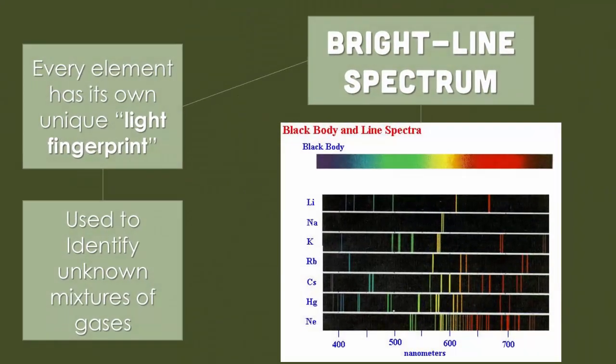Now we get these bright line spectrums. This is a very unique light fingerprint for each and every element, and we use it to identify unknown mixtures of gases. For example, the stars. This is how astronomers are going to determine what elements make up a star that is billions of miles away from us. They identify their bright line spectrums, identifying the elements, because it is unique.